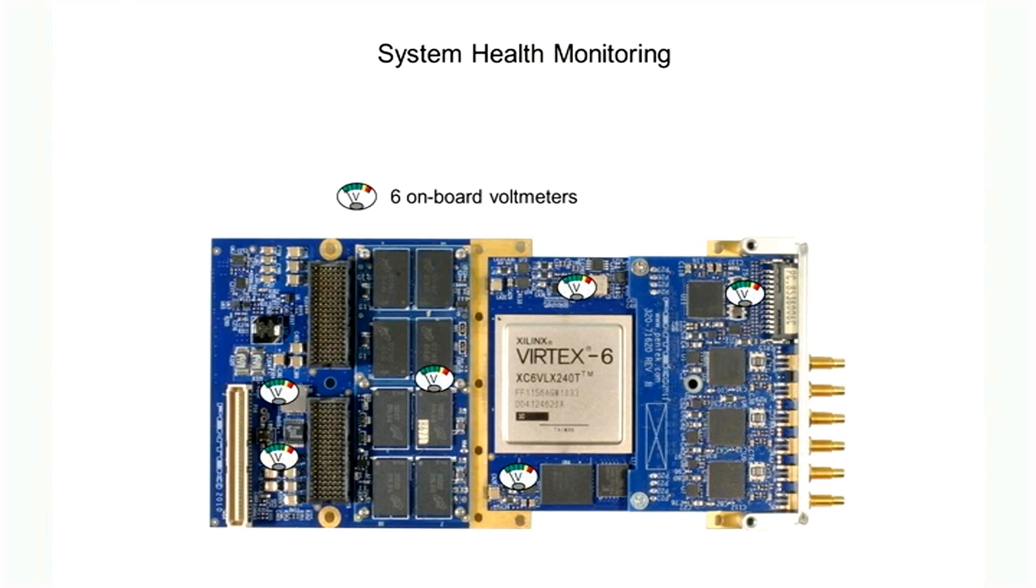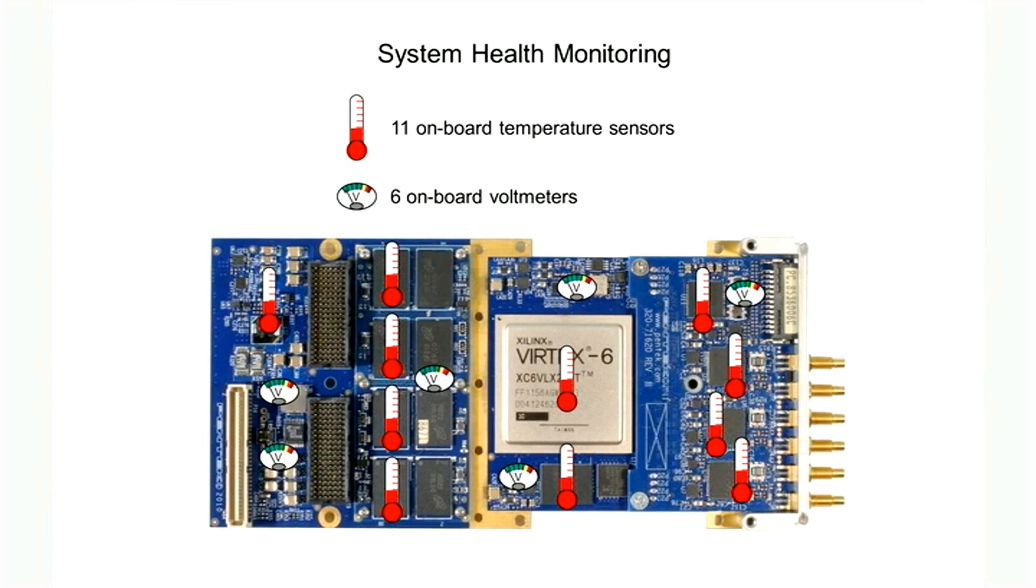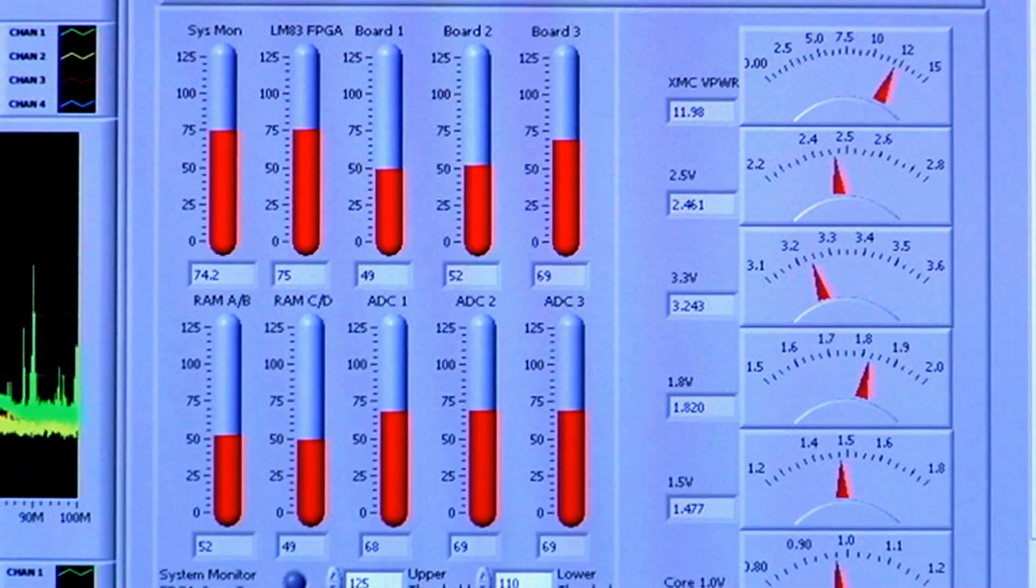The COBOL family addresses this with six onboard volt meters for monitoring all critical supplies and 11 onboard temperature sensors located in strategic positions throughout the board. These monitors are ideal for evaluating system-level cooling and can be integrated into an application control panel for easy operator access.